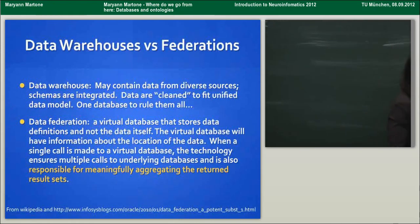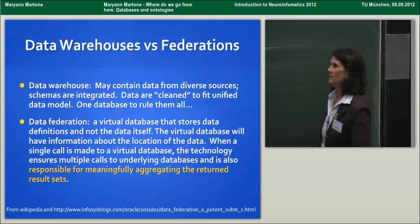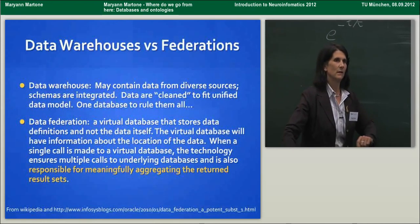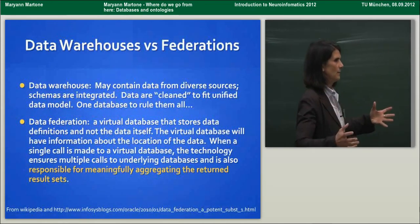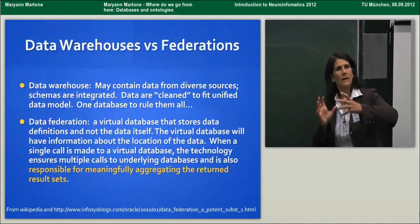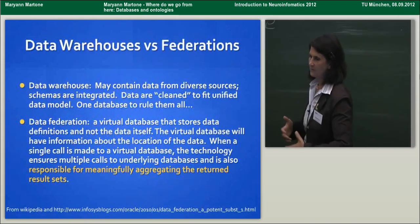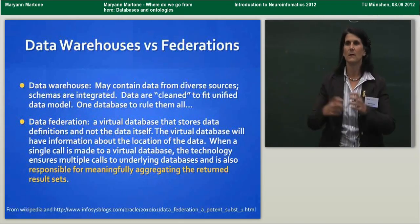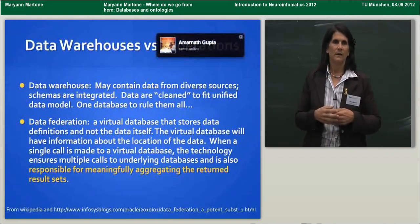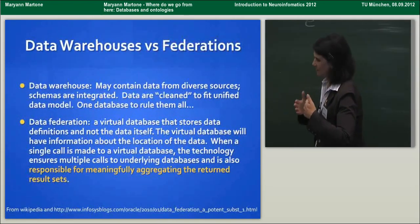One of the first things I want to do is introduce a few terms. We have two ways that we can integrate information in terms of information systems. With the emphasis these days on big data, you will hear a lot about data warehouses. Data warehouses essentially mean that I take all the information available on any given topic and I create one large schema, one large data model that describes it all. If I get a new source of information, I align it, clean it, and fit it to that large data model.